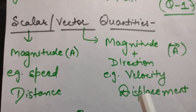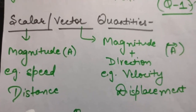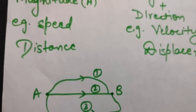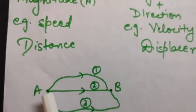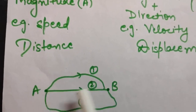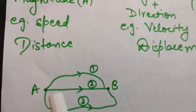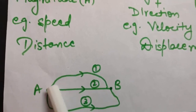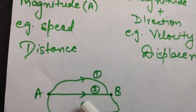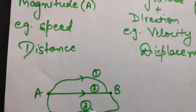Now let us study the main difference between distance and displacement. We have two points A and B with three paths between them. If I ask you what will be the distance for all three paths, the value of distance for all three will be different - they all have different values.